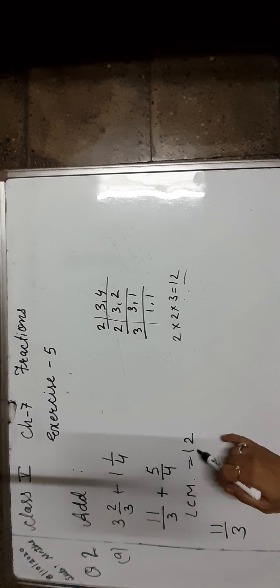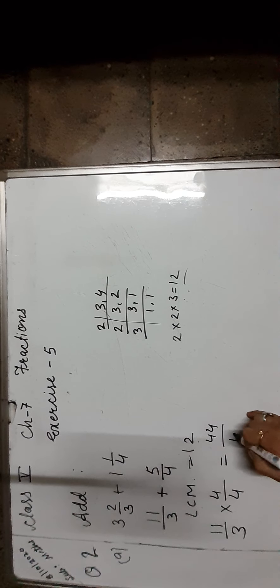So students, as you can see, the given fractions are unlike. To make them like, first find the LCM of the denominator. The LCM of 3 and 4 is 12. Let us form equivalent fractions with this denominator. Now let us take the first fraction that is 11 upon 3. How much do we multiply? Multiply 3 to get 12 — it is 4 times. So both numerator and denominator are multiplied by 4, which is equal to 44 upon 12.